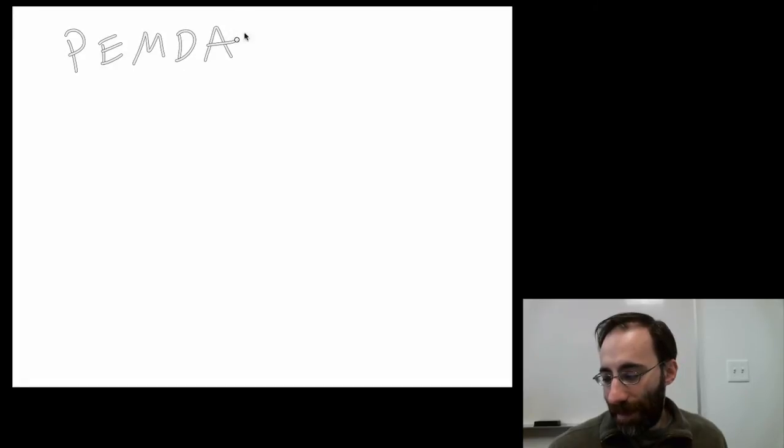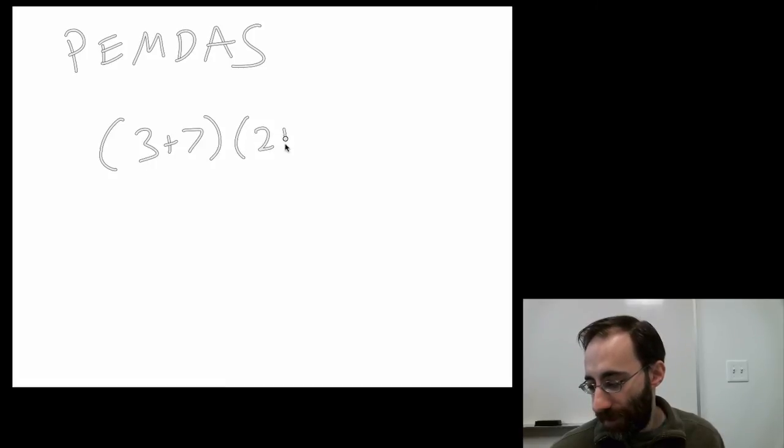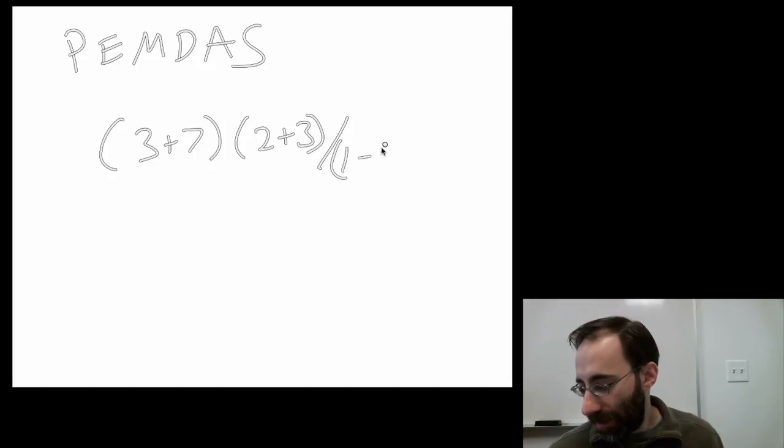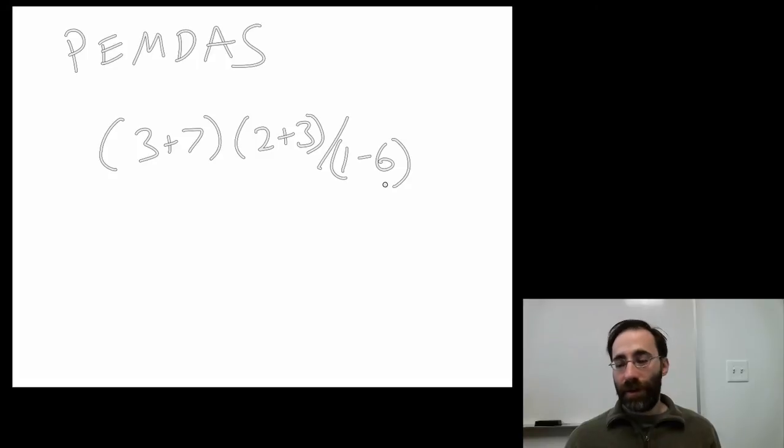Before we close this particular lecture, we should talk about how operators work. These operators have particular rules. There's an acronym for those rules, PEMDAS. If you go for acronyms, you might like this. It stands for the order of operations. The order of operations is, if you have a whole long expression, how do you take the order of those operations? So for instance, you might have 7 + (3 + 7)(2 + 3)/(1 - 6). How would you evaluate this expression? Well, PEMDAS tells you. First, you deal with things in parentheses.